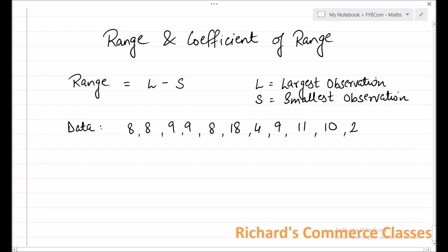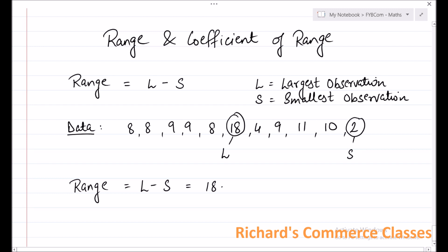To calculate range, you first need to look at the data and find what is the largest observation — that is the highest number. If you look carefully, 18 is the largest observation and the smallest observation is 2. So now that you have found L and S, you can apply the formula: range is equal to L minus S, that is 18 minus 2, which is equal to 16.